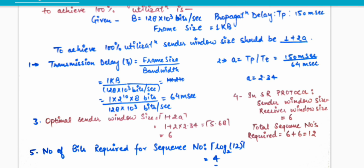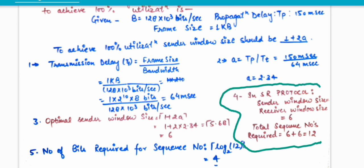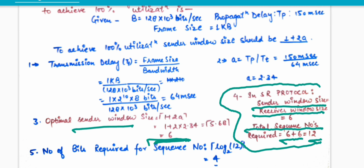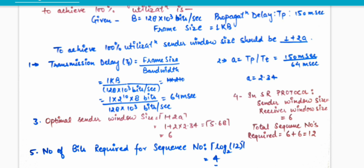The question asks for the number of bits required for the sequence number. First we need to know how many sequence numbers are required. As I mentioned earlier, the total number of sequence numbers equals sender window size plus receiver window size. In selective repeat protocol, that is 6 + 6 = 12. We always take the ceiling value, so total sequence numbers = 12.